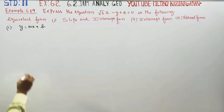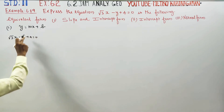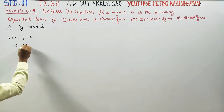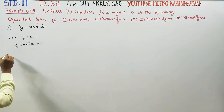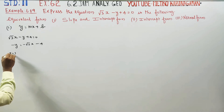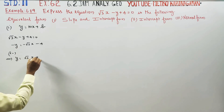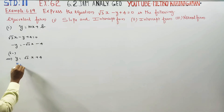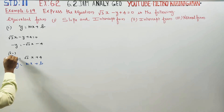The equation is root 3x minus y plus 4 is equal to 0. Rearranging the left-hand side: minus root 3x plus 4 is equal to minus 4. Multiplying through by minus 1, you get y is equal to root 3x minus 4 plus 4, giving y is equal to root 3x plus 4. Here m is equal to root 3 and the constant is 4.